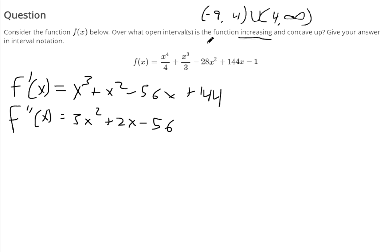But we're supposed to find the interval where it's increasing and concave up. So it has to have both of those things. So for concavity, we set the second derivative equal to 0 to find all the potential inflection points, to find all the places where it could switch.